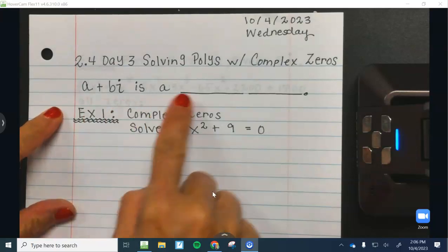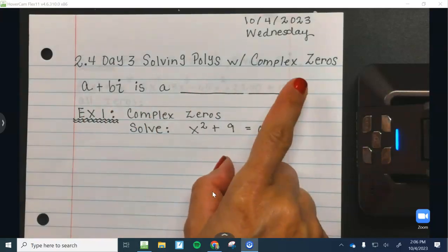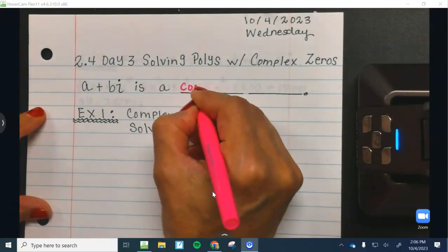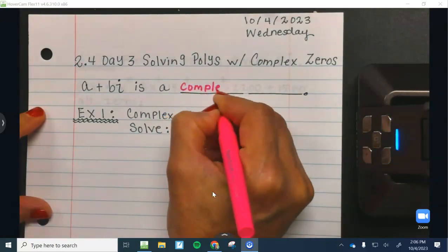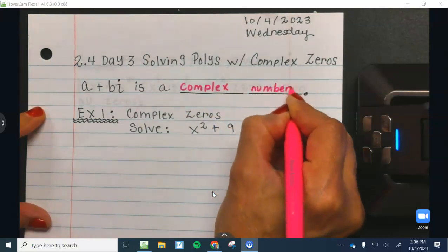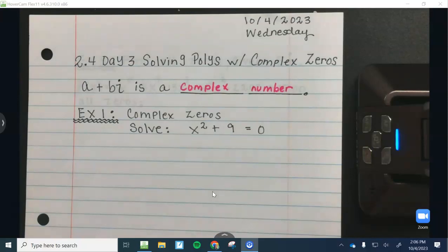A plus B I, guys, is a complex number. So a complex number is just real and imaginary. It's just going to have that letter I, not really a big deal, because you guys have seen this before. It was craziness when you first learned it, but y'all are pros at I's now.